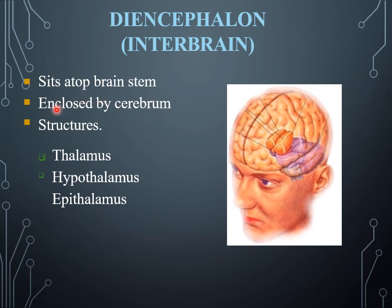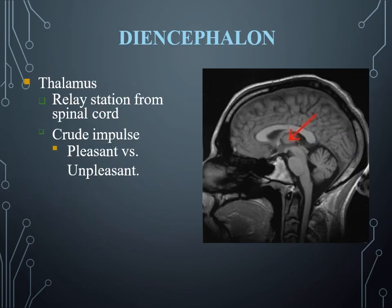The diencephalon, or interbrain, sits atop the brain stem and is enclosed by the cerebrum. Its structure consists of different regions including the thalamus, hypothalamus, and epithalamus. The thalamus region relays signals from the spinal cord and crude impulses, and is involved in processing pleasant and unpleasant signals.